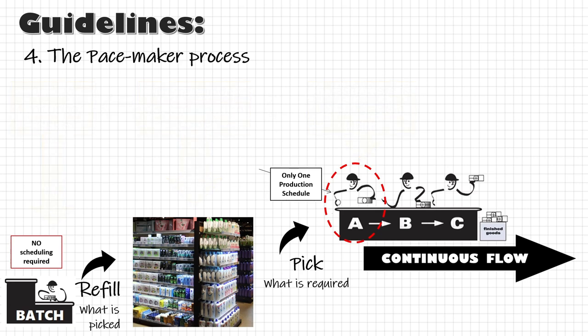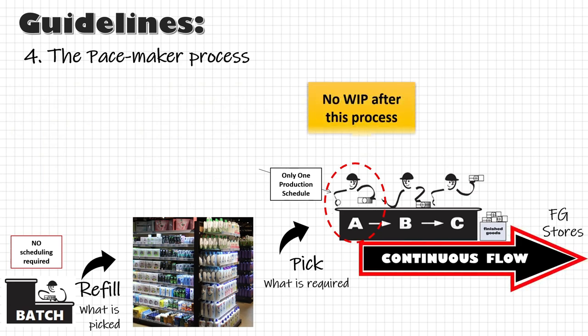One more point: the material movement from the pacemaker process to finished goods needs to happen in a flow. In other words, there will be no WIP between the pacemaker process and the finished goods store. That means generally the pacemaker process is the most downstream continuous flow section in the value stream.